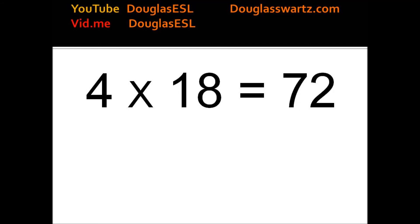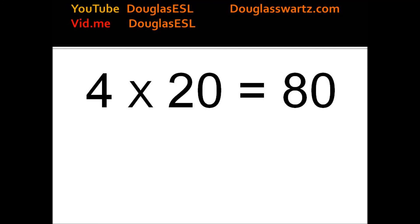4 times 14 equals 56. 4 times 15 equals 60. 4 times 16 equals 64. 4 times 17 equals 68. 4 times 18 equals 72. 4 times 19 equals 76. 4 times 20 equals 80. 4 times 21 equals 84.